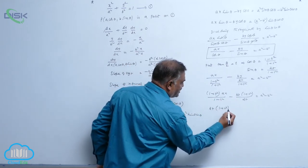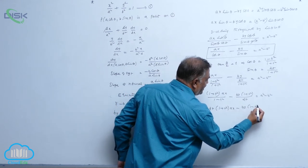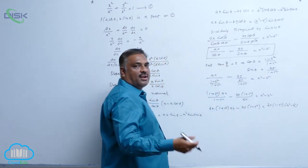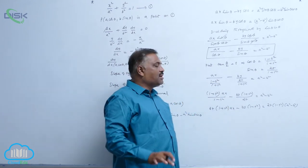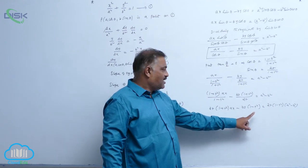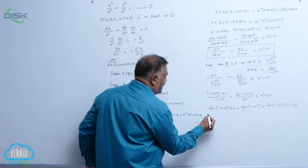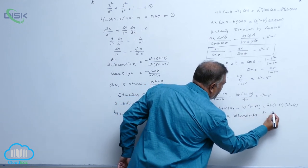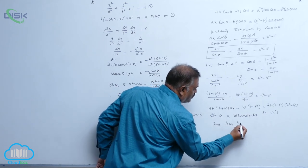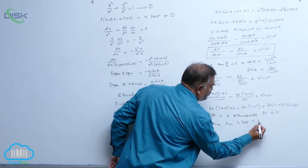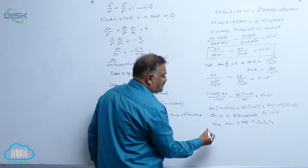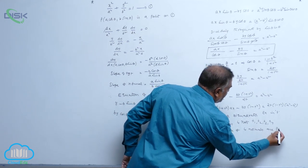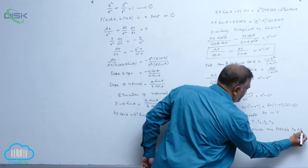Taking LCM gives 2t(1 plus t squared), and 1 minus t to the power 4 will come. We are not worried about the full simplification, but we observe that t to the power 4 is present. It is a biquadratic equation in t and has 4 roots t1, t2, t3, t4. Hence, a maximum of 4 normals are possible to an ellipse from a point.